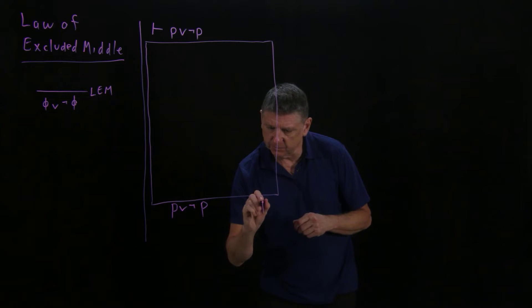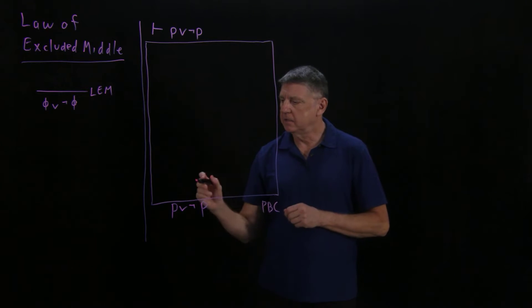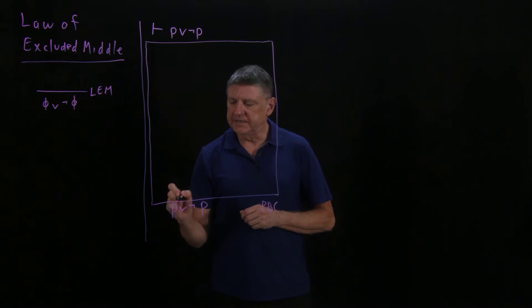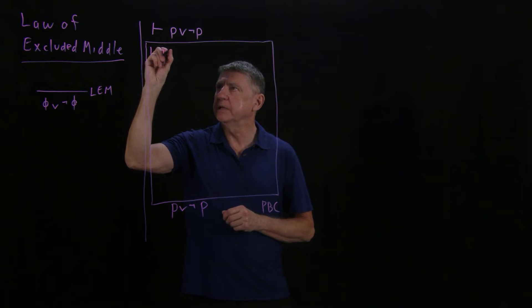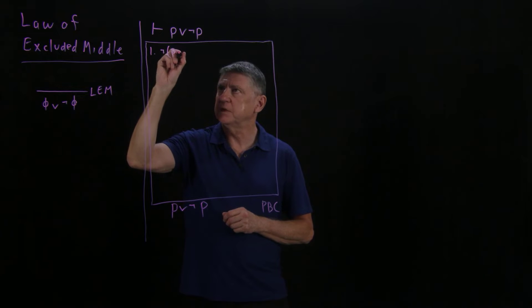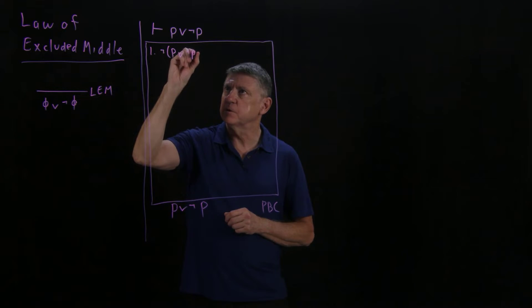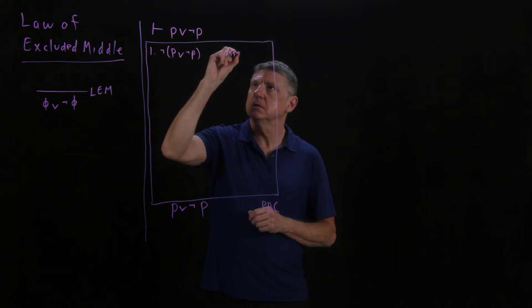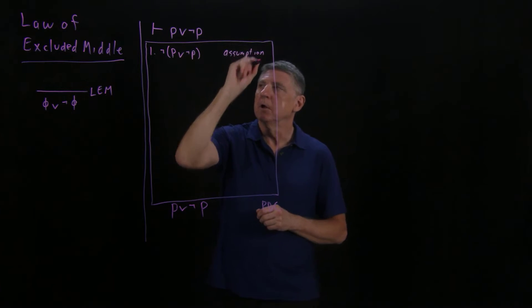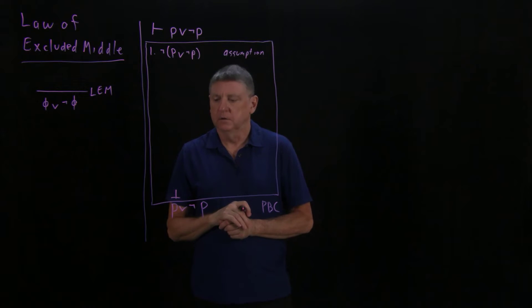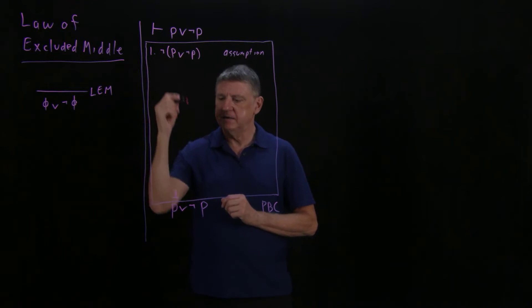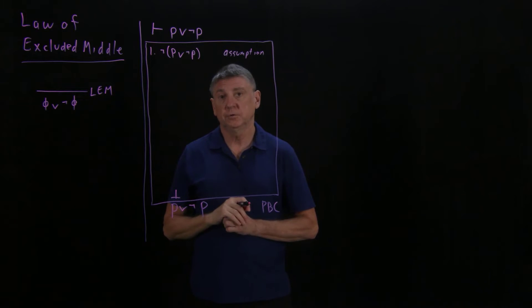In proof by contradiction, we begin with our assumption box. We'll write the reason for the assumption box being proof by contradiction. And we then write the negation of the formula as the top line. This will now be line one of our proof, and that will be it is false that either p is true or p is false. So that's an assumption. We write, because this is a proof by contradiction, we write the bottom symbol at the end.